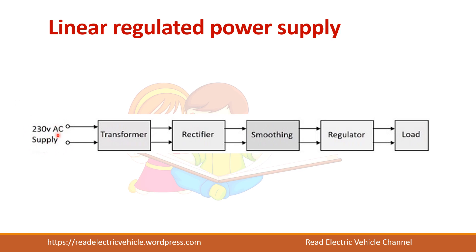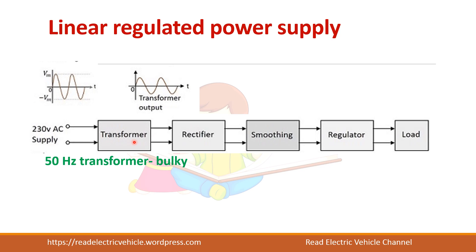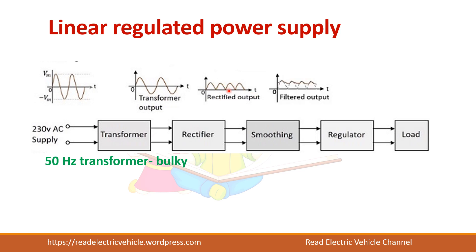So we have AC supply with a frequency of 50 hertz. This will be given to a step-down transformer, which operates at 50 hertz because the supply frequency is 50 hertz. So the size of the transformer will be usually large. The transformer output will be given to the rectifier, and you will get a rectified output. This output has to be filtered because the ripple is high, so a capacitor can be used to filter the rectified output.